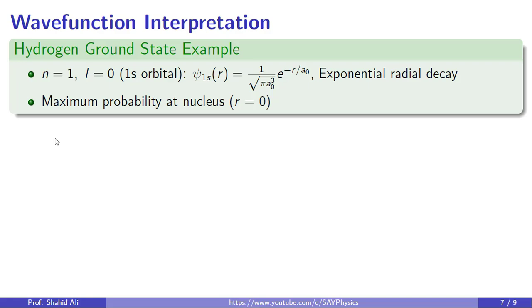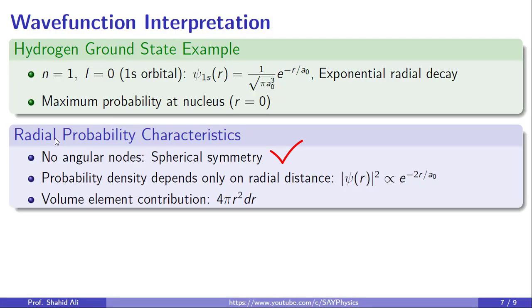In fact, the maximum probability density occurs right at the nucleus when r equals zero. Since this is an L equal to zero state, it has no angular nodes. The electron cloud is spherically symmetric and the probability only depends on how far you are from the nucleus, not in which direction. But here is a subtle point. Even though the probability density is spherically symmetric, we still have to account for the radial volume element when calculating probability in three dimensions. That is why we include 4πr² dr. This means the most probable radial distance is actually not zero. It is slightly away from the nucleus due to this volume factor.